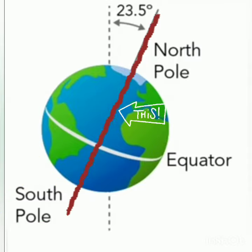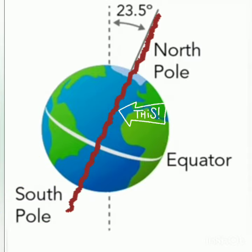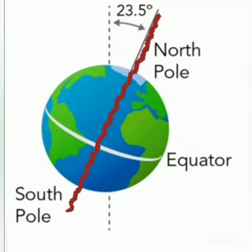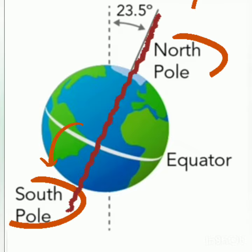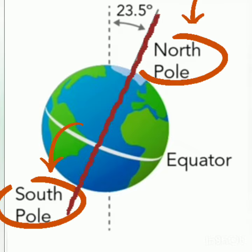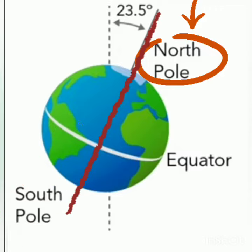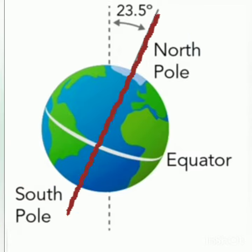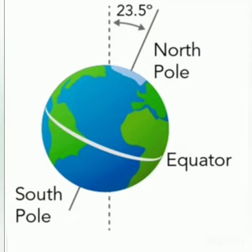This imaginary line that runs through the center of the Earth and joins the North Pole and the South Pole is known as axis. The axis of the Earth is tilted, meaning it is not straight.